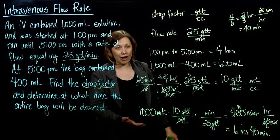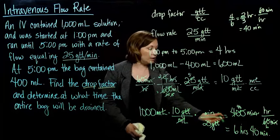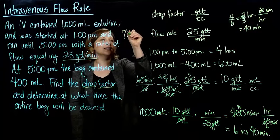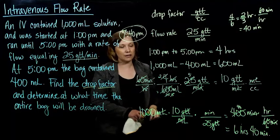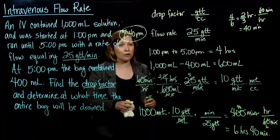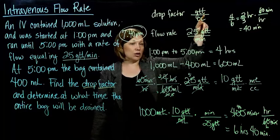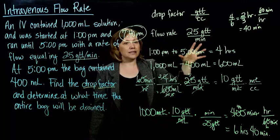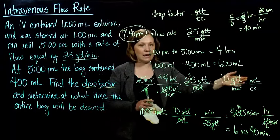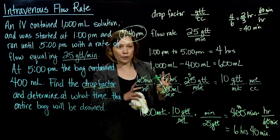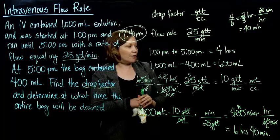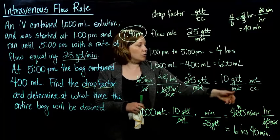6 hours from 1 o'clock would be 7 o'clock, and then 40 minutes more, so that would be 7:40 p.m., is when the bag will be completely drained. So that's a multi-step problem, and I would say start out, when you're trying to figure out the drop factor, look at the units you're trying to get. So we want drops per cc, and then see how you can use the information you have to create conversion factors that you can multiply by to cancel out units to end up with that drop per cc. It's kind of a little bit like a chess game. You're trying to strategize how you're going to multiply these factors together to get the units that you need to have.